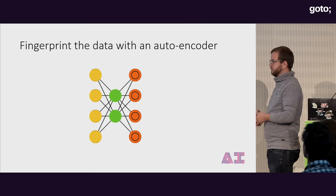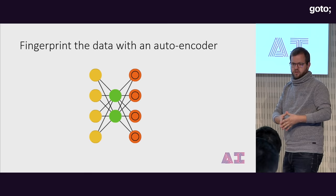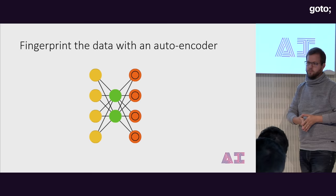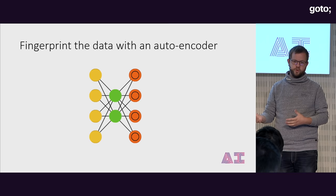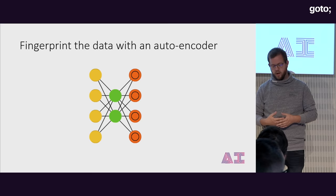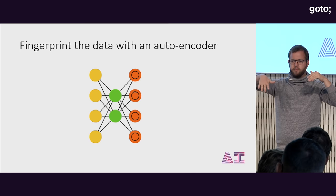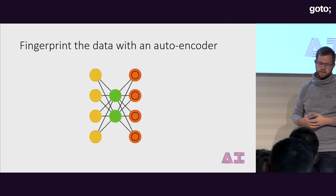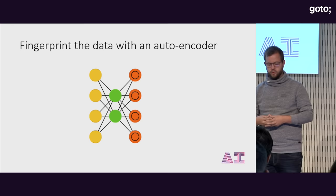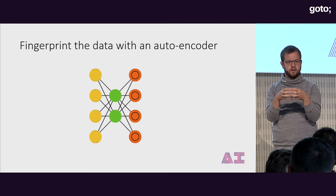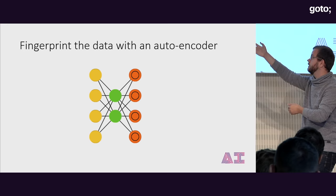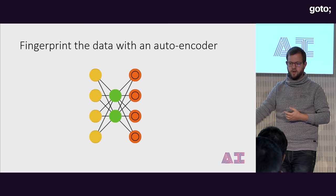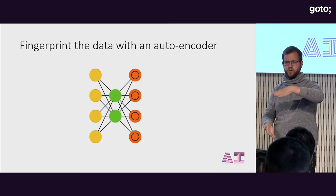The first step is to define an architecture for a neural network. When I think about an FAQ bot, it's basically a search problem — if I ask a question, it will search for it in my database. What I'm going to do instead is build a neural network that compresses my data into a much smaller format — a fingerprint of the data. I do this by first using a layer with a lot of neurons equal to the number of words in my vocabulary, then a layer with a smaller amount of neurons to compress the data into a smaller representation.